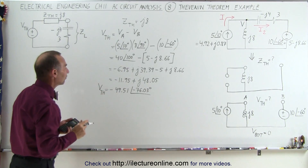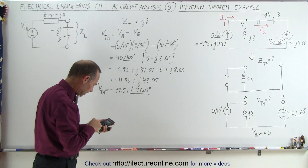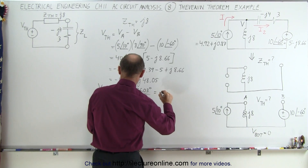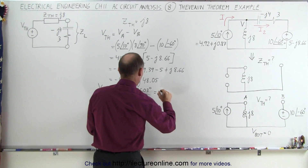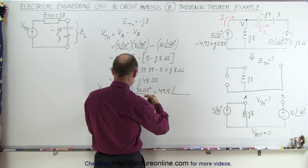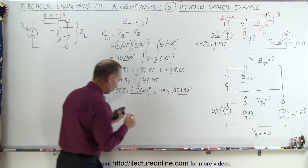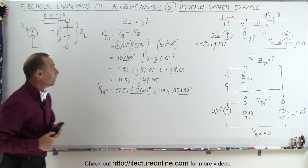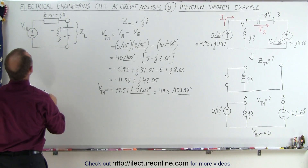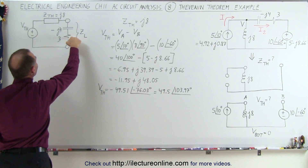If we want to express it with a positive magnitude, we can add 180 degrees, so this can also be written as positive 49.5 at a phase angle of 103.97 degrees. So V_Thevenin equals 49.5 at 103.97 degrees, and Z_Thevenin equals J8.